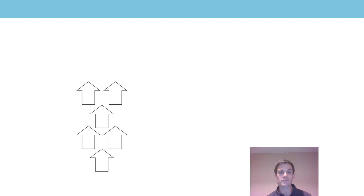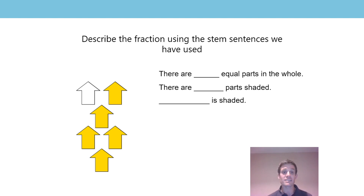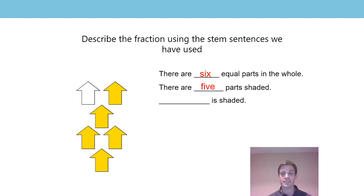Let's look at this problem together. This time, first of all, I want to know what is the whole. Well, the whole is all of the arrows, and I've now shaded some in. Let's see if we can describe the fraction using the sentence stem: there are six equal parts in the whole, and there are five parts shaded, so that means that five-sixths is shaded.